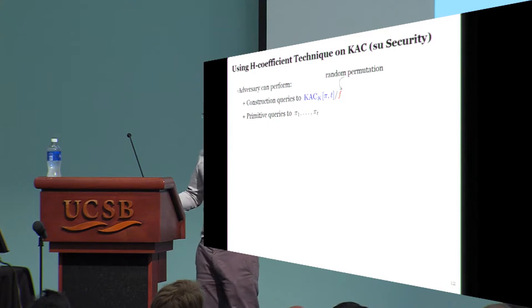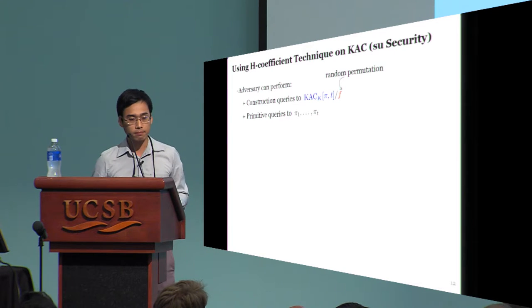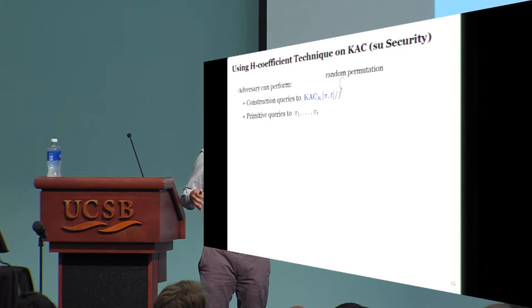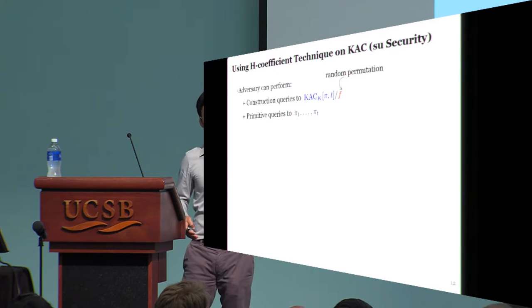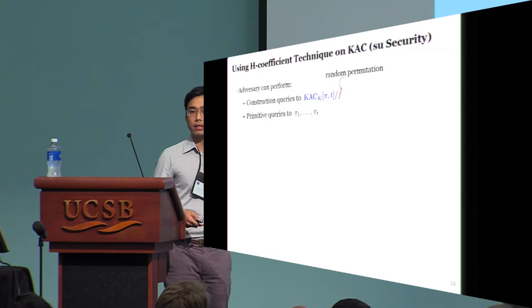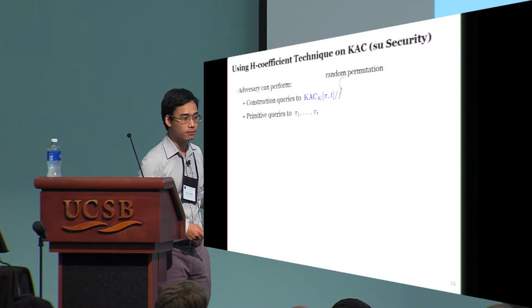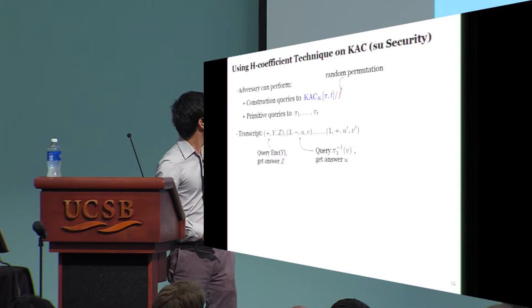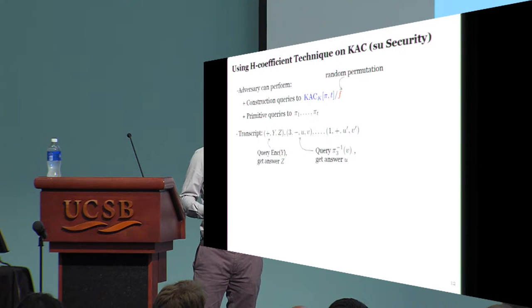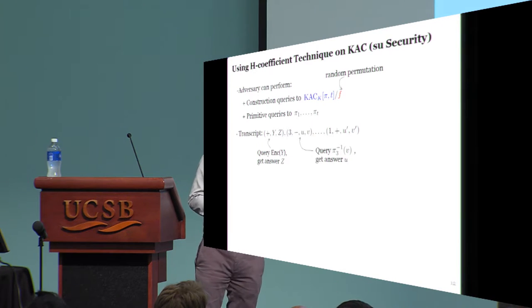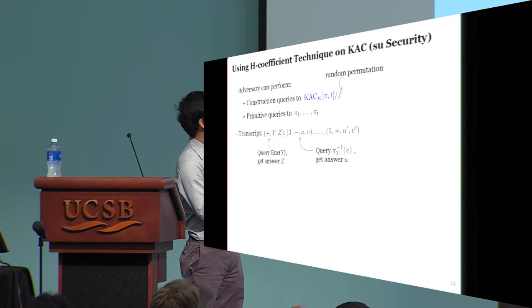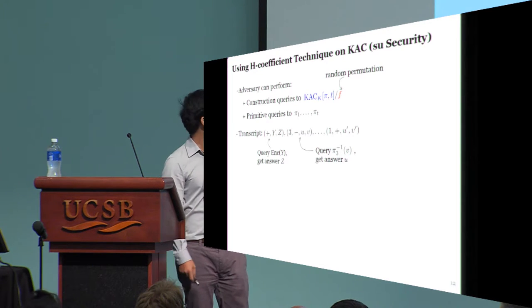Now let's try applying the H-coefficient technique to the KAC problem. Recall that the adversary can make two types of queries: either a construction query to the KAC block cipher, or primitive queries to the permutations pi 1 to pi t. These queries and the answers will be recorded in a transcript like this. For example, here the transcript tells us that if you encrypt a plaintext y, then you get a ciphertext z, or if you query a string v to the inverse of pi 3, then you get a string u.